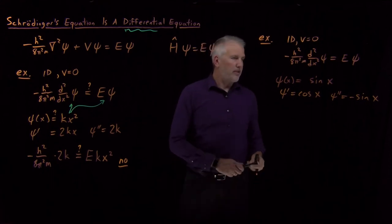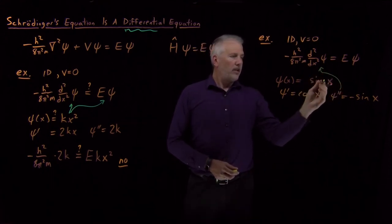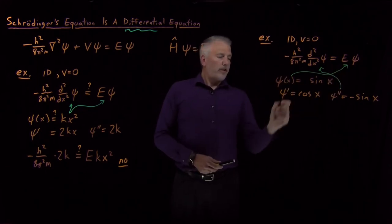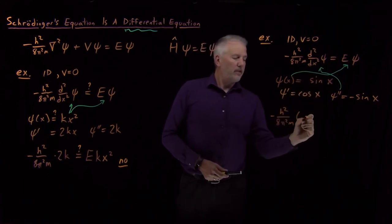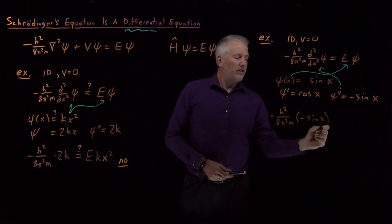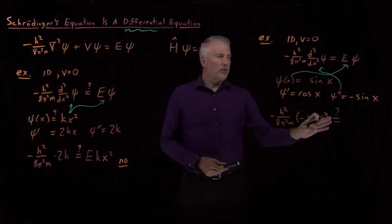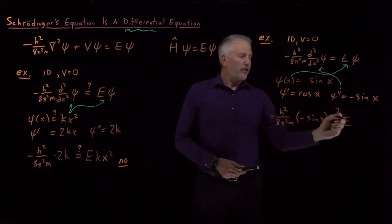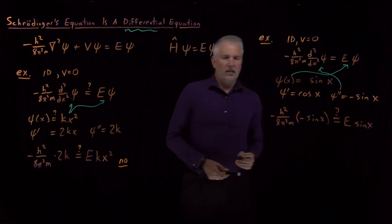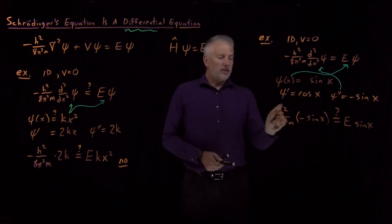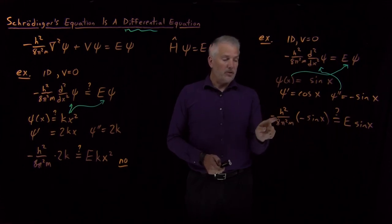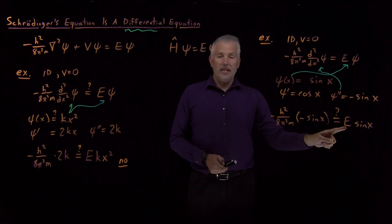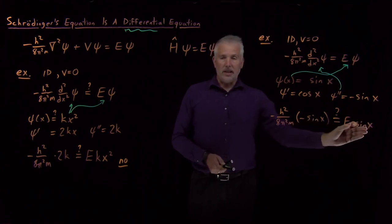When I plug both the second derivative and the function into the equation, on the left I have minus h-squared over 8 pi-squared m times negative sine of x. That's equal to — I'm asking — some constant E times the wave function, which is sine of x. So now the question is: is this collection of constants times sine of x equal to E times sine of x? And the answer is maybe — if the collection of constants minus h-squared over 8 pi-squared m times negative one equals E, then the constants times sine of x match on both sides. So it's possible.